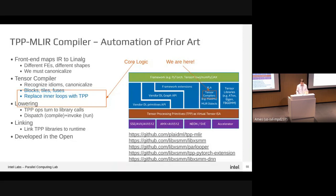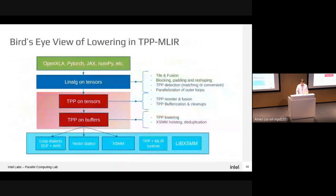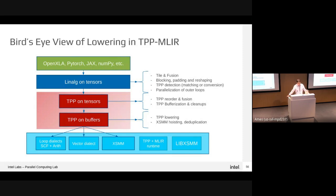Everything here is in the open — you can tell us it's all crazy or you love it. For the bird's-eye view: we start on LinAlg on tensors before bufferization, and here we want to take big decisions that are no longer entangled. We use information from lower-level stacks — fusion, blocking, and how we select operations of the virtual ISA. We also make parallelization decisions at this level.